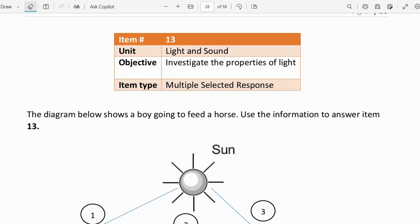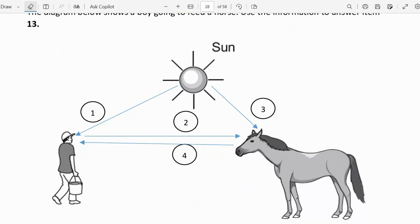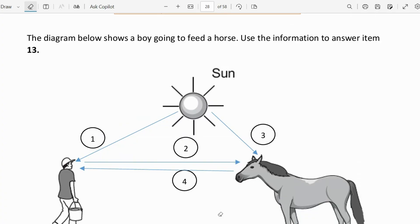Let's move on to the next question. The diagram below shows a boy going to feed a horse. Use the information to answer item 13. So let's look at the boy here. We can analyze the diagram by saying the arrow is the direction in which the light ray flows. The sun shines on the boy, and then second, he looks at the horse, and then third, the sun light rays shine on the horse, and then the horse looks at the boy. So that's what I'm taking away from the diagram.